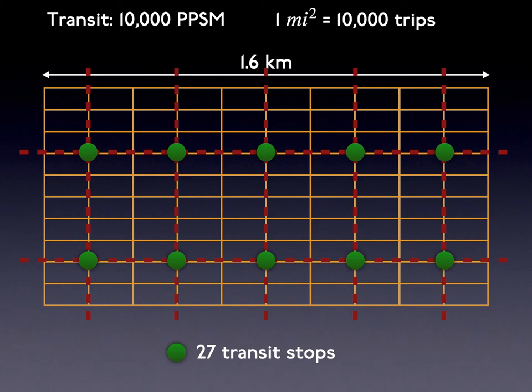If we assume that every person originates many short trips — which can be dealt with by walking or biking — and one long trip per day, say going to work, school, or shopping, the 10,000 persons per square mile would generate 10,000 transit trips per square mile. This is roughly streetcar-era demand in cities. If we space transit routes every half mile, as was typical of streetcars, both east-west and north-south, with stops where transit routes crossed and halfway between, the square mile area is served by 21 stops.